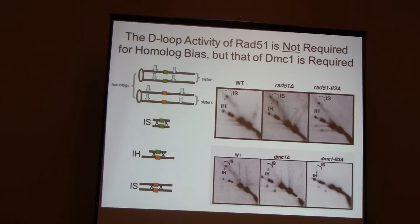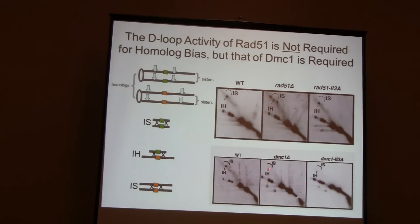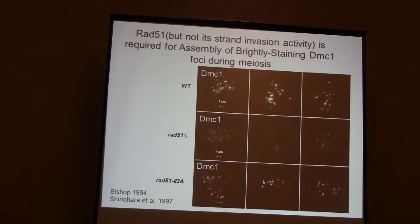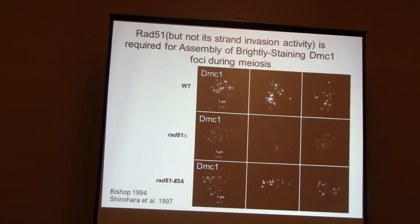By contrast, we made the equivalent site 2 mutation in DMC1 — the site is conserved, and all the biochemistry confirms it behaves the same as the Rad51 23a mutant in vitro. In the partner choice assay, the DMC1 null shows no joint molecules, and the DMC1 23a mutant also shows no joint molecules. That tells us it's DMC1's strand exchange activity that's critical, not Rad51's.